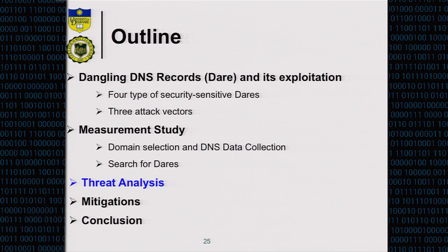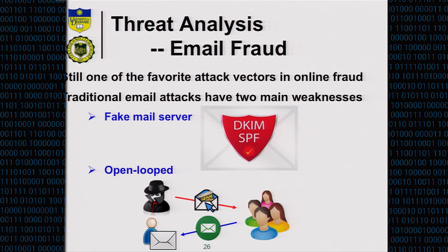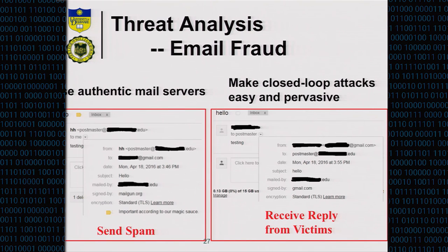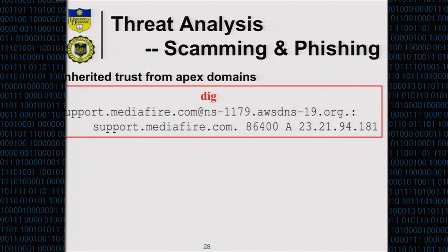For threat analysis, the first case is email fraud. Currently, a fake email server can be easily blocked by DKIM or SPF, and it's an open loop — you send spam but never get a reply. But by exploiting dangling MX records, you can send mail scams using an authentic email server, bypassing DKIM. This also creates a closed loop — you can send spam and receive replies. That's a major advantage for the attacker.